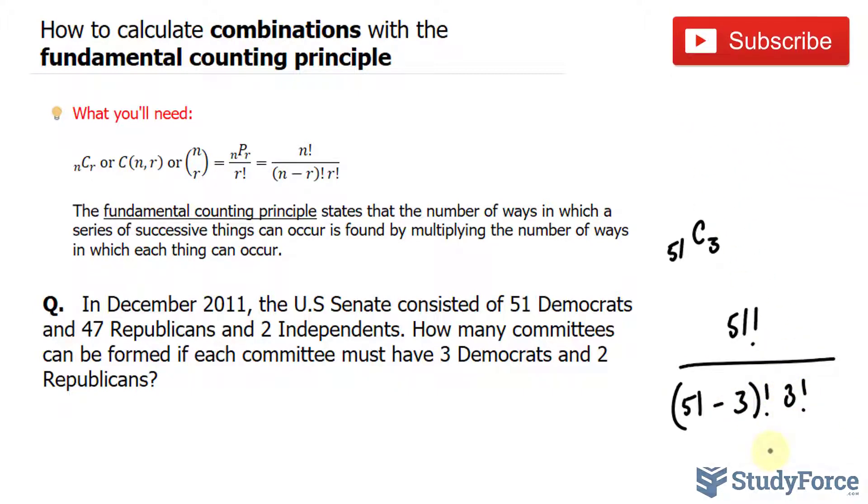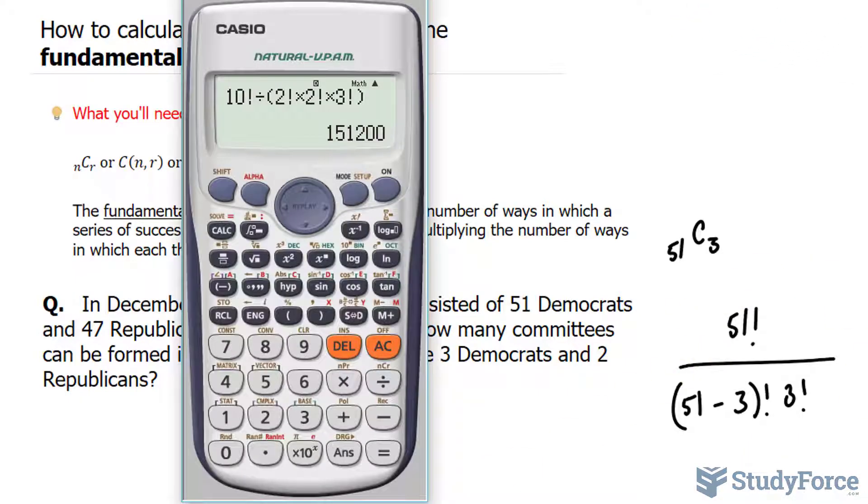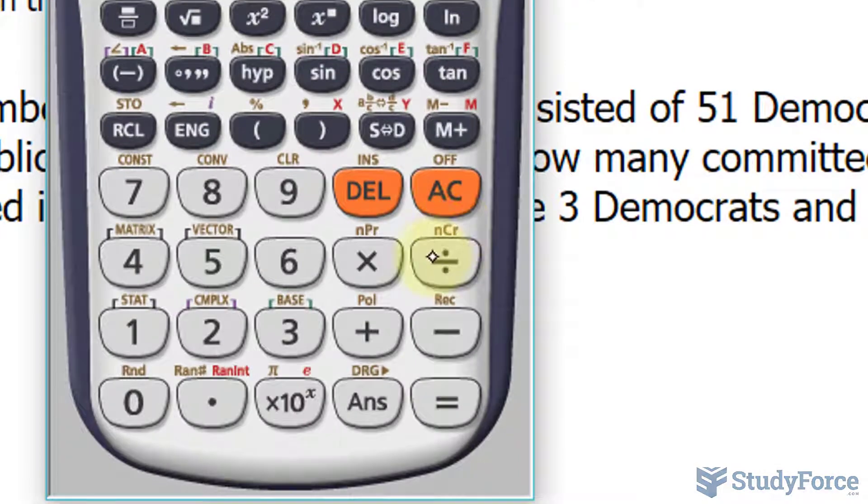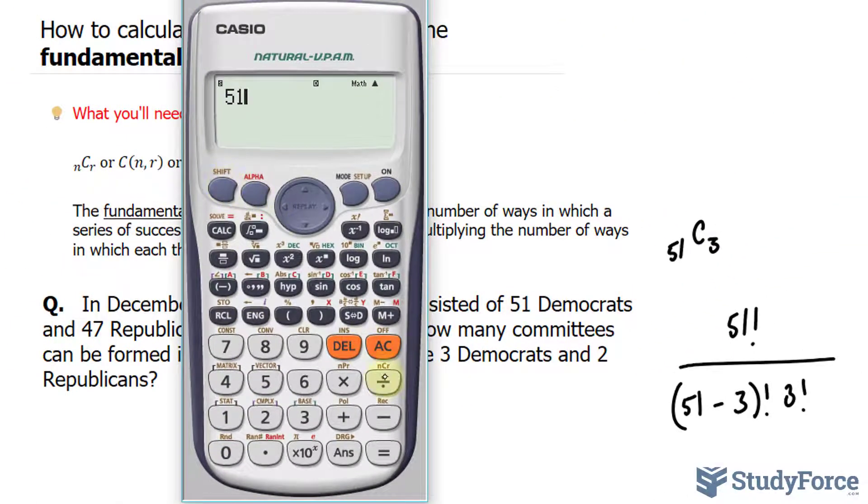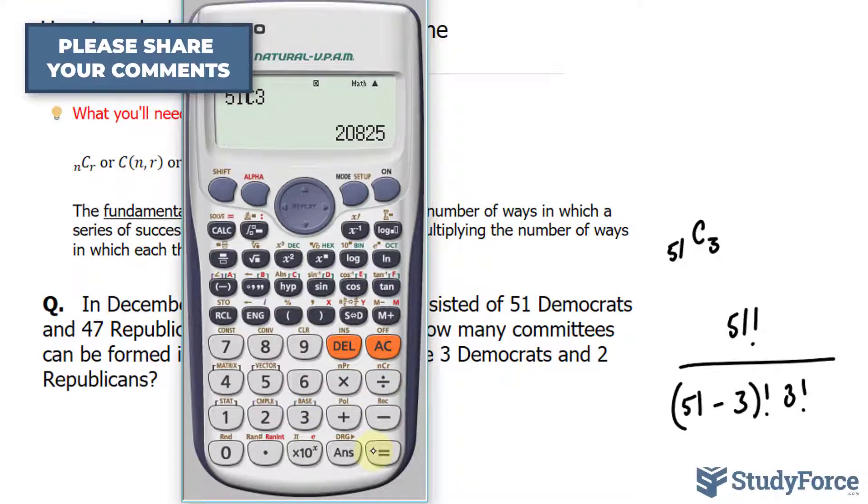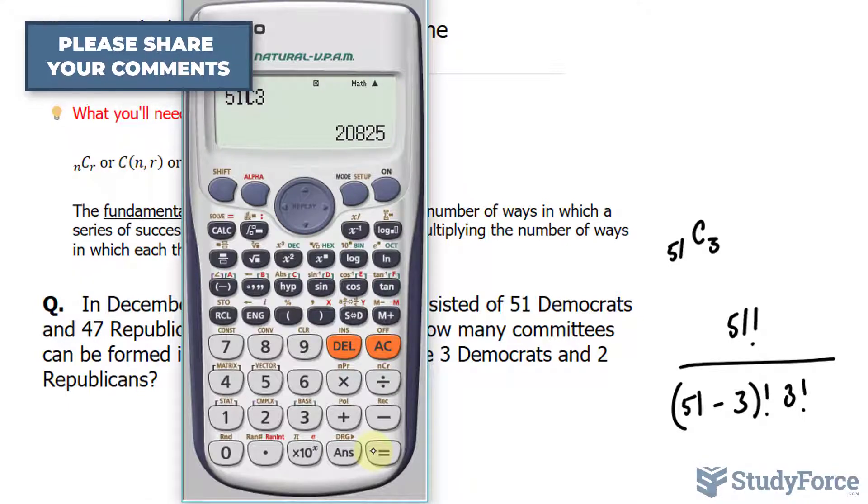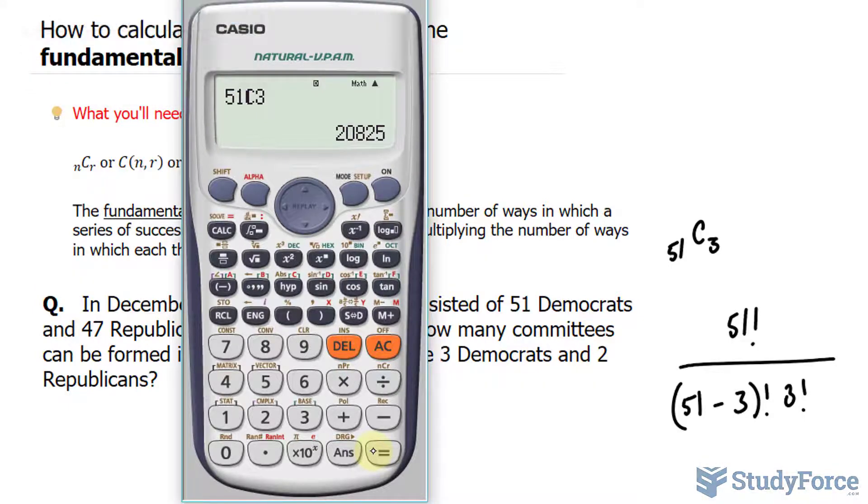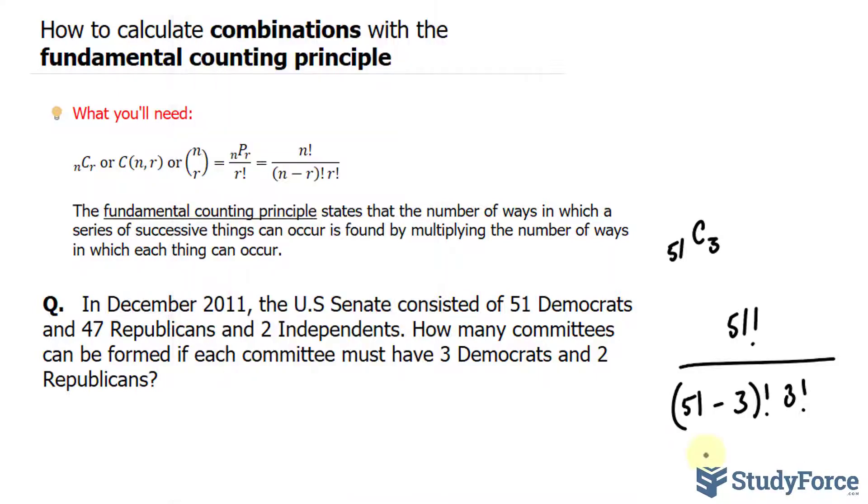Now you can use the function on your calculator to figure this out or you can input this manually, but for convenience sake I'll just use the function that is already in my calculator. I'll type in 51, shift this button, and 3. This gives us 20,825 ways to select 3 candidates from the Democratic Party.